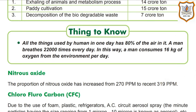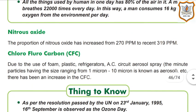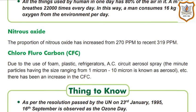For your knowledge — things to know: All things used by a human in one day contain 80% air. A man breathes 22,000 times every day. In this way, a man consumes 16 kg of oxygen from the environment per day.